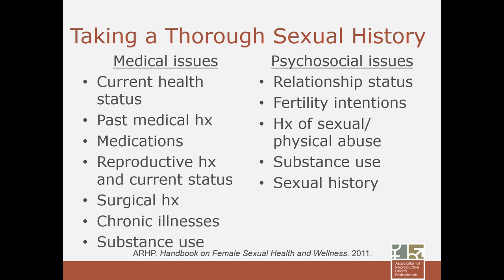Psychosocial screening must also be included as part of the thorough sexual history. What is the current relationship status? — we saw that was the number one predictive factor for sexual frequency. What are the woman's fertility intentions? Women actively seeking pregnancy may experience sex differently. Any history of abuse — sexual, physical, emotional, or verbal — is very important. And a sexual history including age of initiation, number of partners, and experiences with previous partners are all important as well.